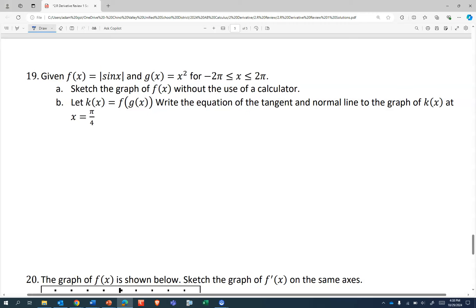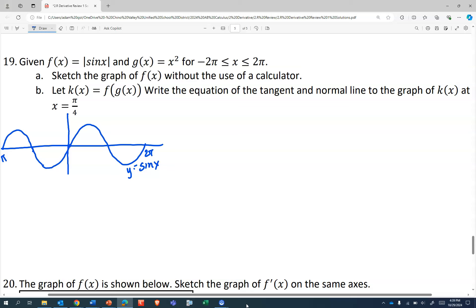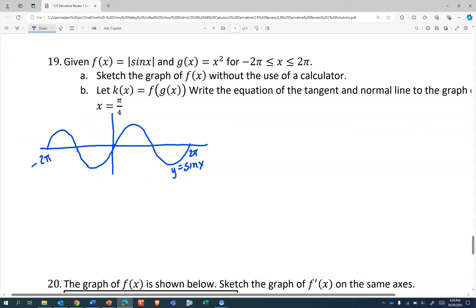f(x) is the absolute value of sin x, g(x) is x² on -2π to 2π. So what does f look like without a calculator? Well, let's think of sin x. That's -2π to 2π. Change the color to red. If we're going to graph y equals the absolute value of sin x, everything that's positive stays positive.